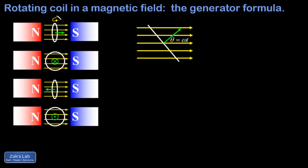The coil rotates with angular velocity omega, measured in radians per second. Multiplying omega by time gives an angle, so in the overhead view, radians per second times seconds gives radians. The starting point is theta equals zero, when the normal vector perpendicular to the coil surface is perfectly aligned with the magnetic field. After that, the angle at any moment is given by omega t. We can use Lenz's law to find the direction of induced current at any point in time.